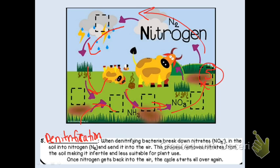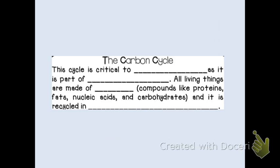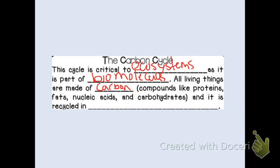That concludes the nitrogen cycle. Let's move on to our carbon cycle — flip over to that part of the interactive notebooking activity. The carbon cycle is critical to all ecosystems as it is a part of biomolecules. All of these things are made of carbon. Carbon is an organic molecule, so this includes proteins, fats, nucleic acids, and carbohydrates, and they're all going to be recycled in the carbon cycle. This is how we take living or once-living matter and recycle it back through the different ecosystems.